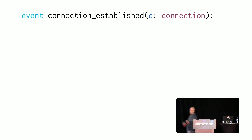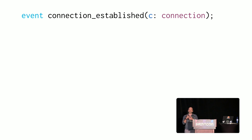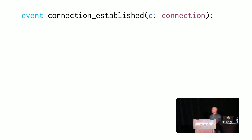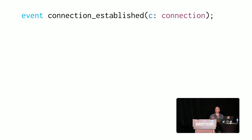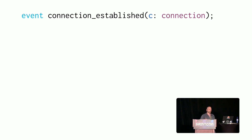When Zeek gets a packet and does deep packet inspection, it looks for certain things in the IP header, in the payload, and throughout the packet. One of these is a connection established event. We pass it the connection, which is a record that includes the ID — a four-tuple: the originating IP, originating port, responding IP, and responding port — and it takes certain actions based on that.